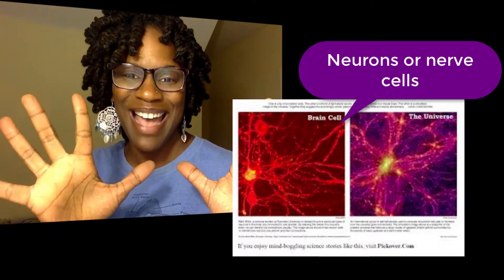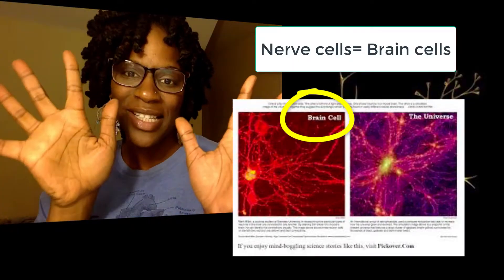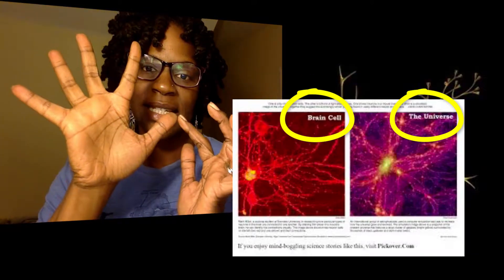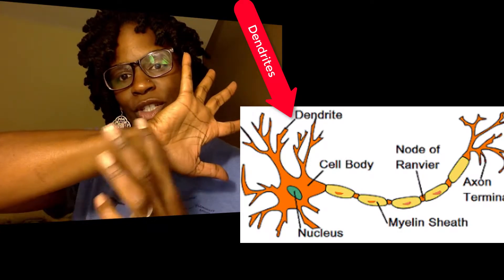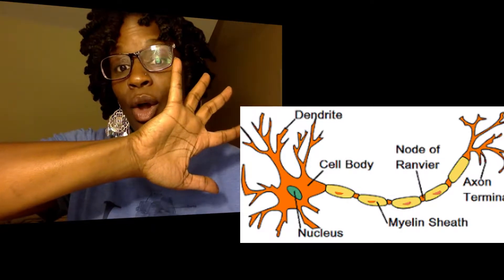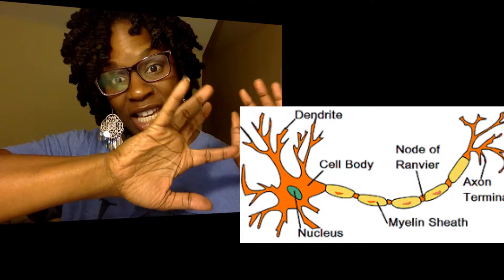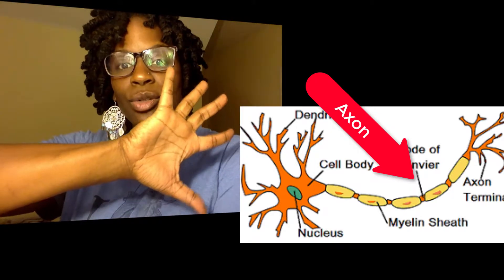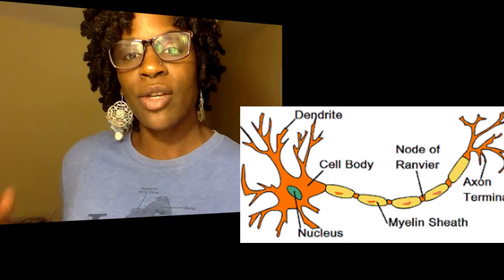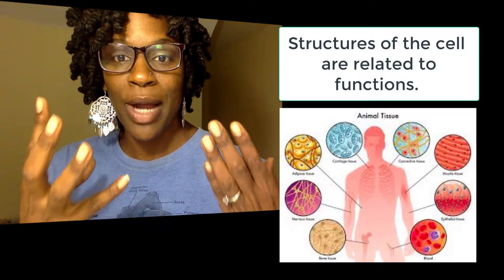Your nervous cell looks like the stars in the sky because it needs to facilitate communication, similar to wires. It has dendrites at the top, a cell body, and then one long axon where messages get sent. It's shaped this way to receive messages and send them to another cell — so the structure helps you figure out its function.